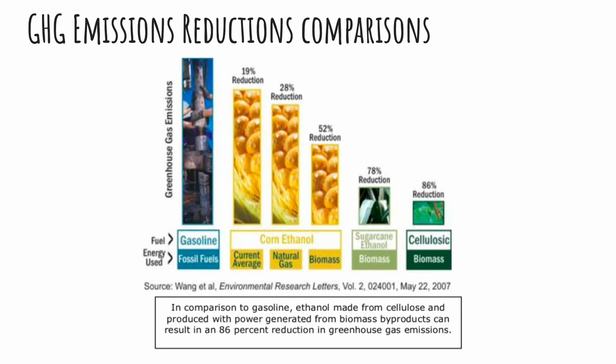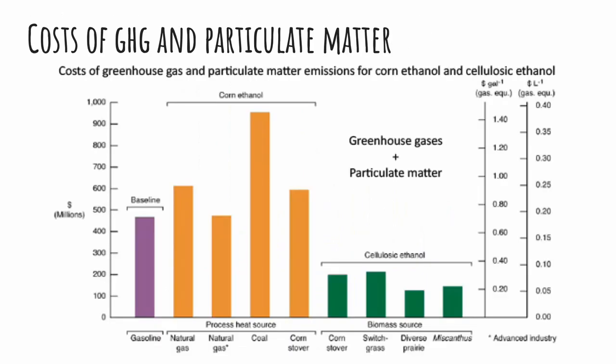Greenhouse gas emissions will decrease dramatically as biofuels of the future are increasingly made from cellulosic feedstocks, and as the associated farming, harvesting, transport, and production processes increasingly use clean, renewable energy sources. Cellulosic ethanol improves the energy balance of ethanol because the feedstocks are either waste of another industry, or dedicated crops such as switchgrass and miscanthus, which use low fertilizer compared to corn. When biomass is used to power the conversion process, the amount of fossil fuel energy used in production is reduced even further.